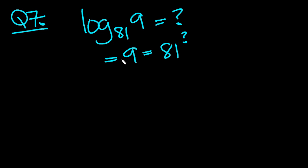Well, we know that 9 nines are 81. So you square 9 to get 81. So 81 to the half will be 9.